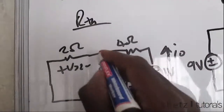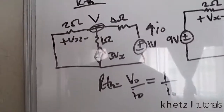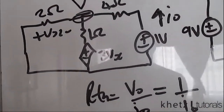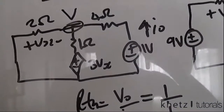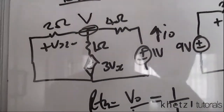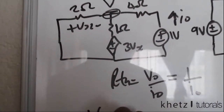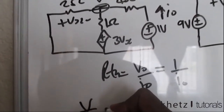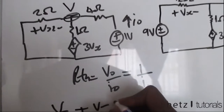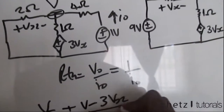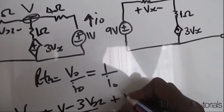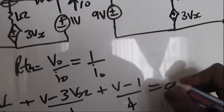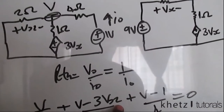Let's call this node voltage v. Writing the KCL equation: v divided by 12, plus v minus 3·vx divided by 1, plus v minus 1 divided by 4, equals zero. We have vx in this equation and need to determine it.